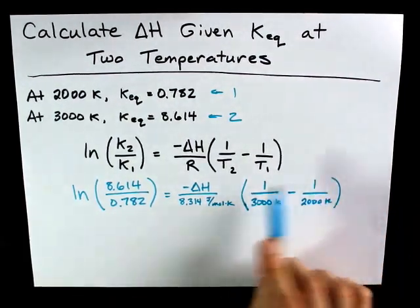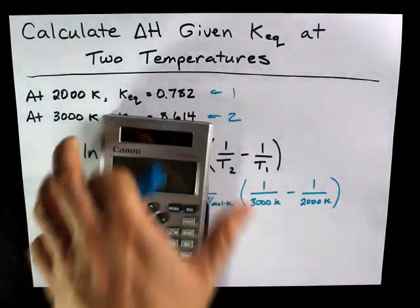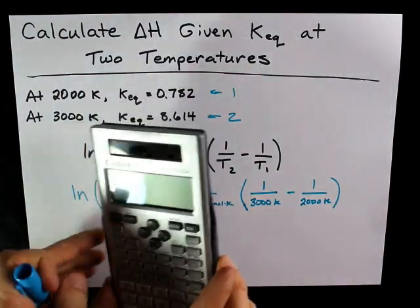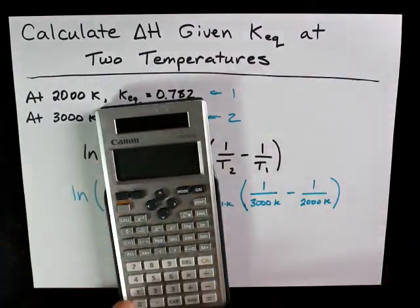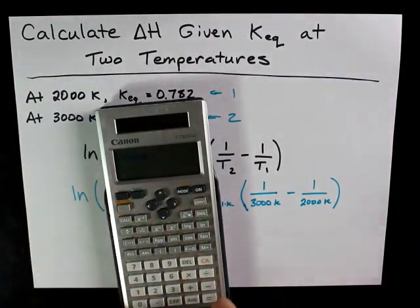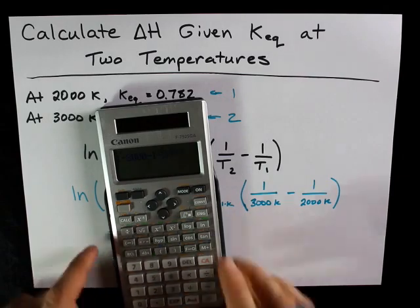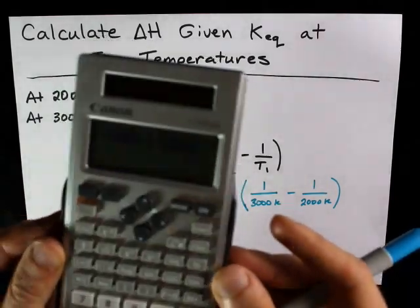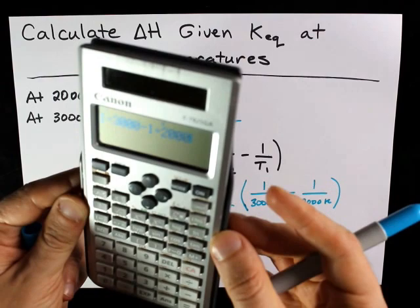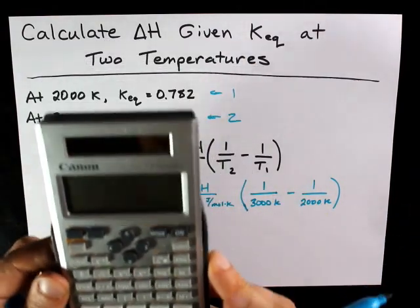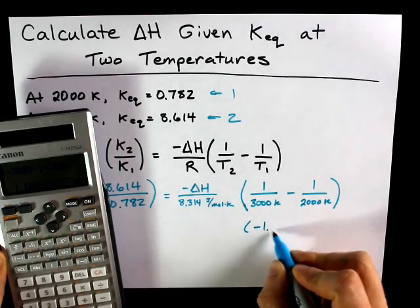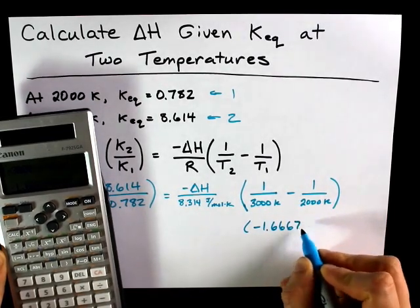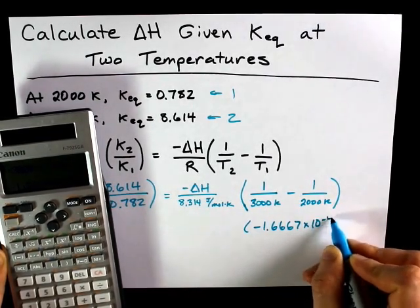I am going to do that first on my calculator. Now, I don't know if you can see what's going on with this calculator exactly, but 1 over 3,000 minus 1 over 2,000. I am able to type all of that in all at once. There we go. That gives me negative 1.6667 times 10 to the negative 4.